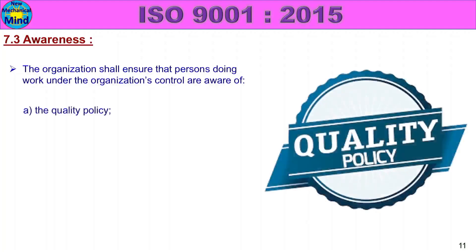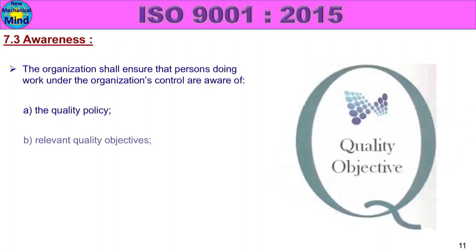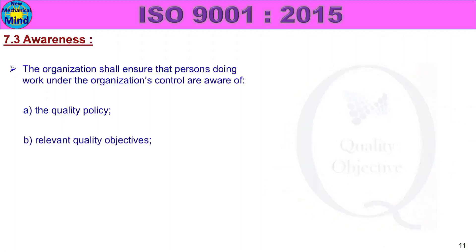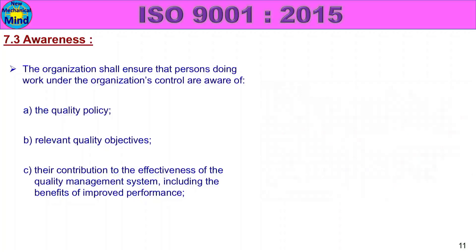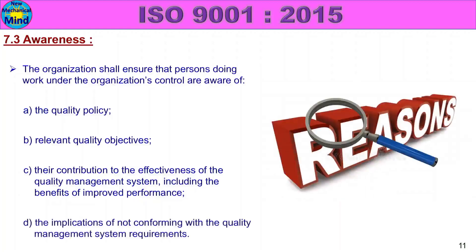7.3 Awareness. Persons should be aware of: the quality policy, relevant quality objectives over each section and function, their contribution to the effectiveness of the quality management system including the benefits of improved performance, and the implications of not conforming with the quality management system requirements.